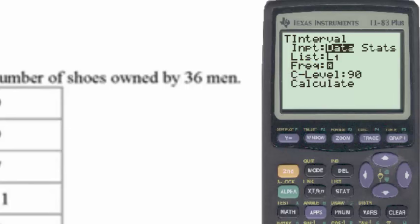Clicking the ALPHA key to turn alpha off, and then the number 1, we're able to put in the frequency of 1, which tells the calculator to simply use list 1 one time.